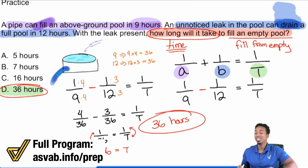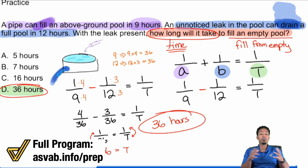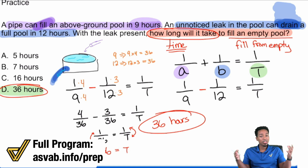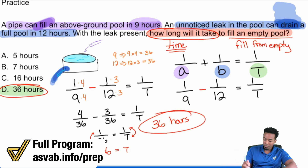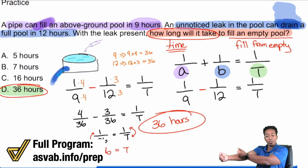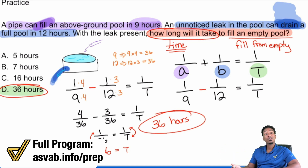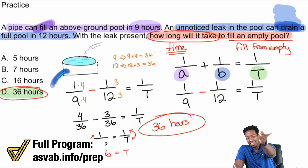I really hope you enjoyed this one, because it's a really good problem to observe with combined work — there are so many different variations of it. This one involved not two things working together, but one basically holding the other back. In that case, we still use the same formula, but instead of adding, we subtract since they're working opposite: one is trying to do the work and one is slowing it down. Let me know if you have any questions — I'm here to help you succeed.